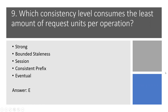Question 9. Which consistency level consumes the least amount of Request Units per operation? Option A: Strong. Option B: Bounded Staleness. Option C: Session. Option D: Consistent Prefix. Option E: Eventual. Option E is the right answer.